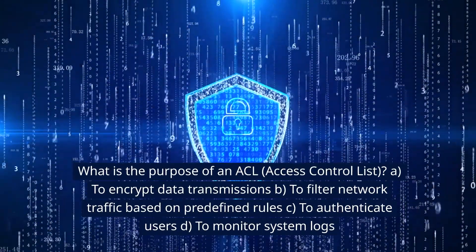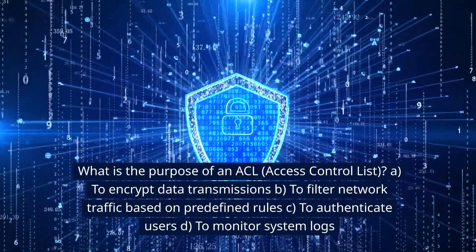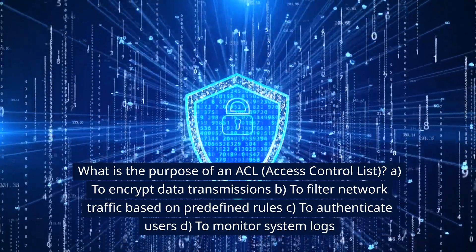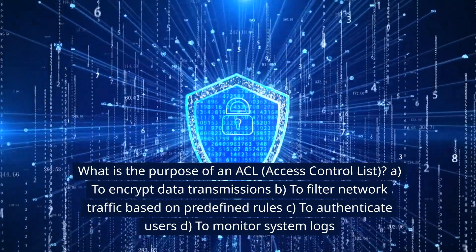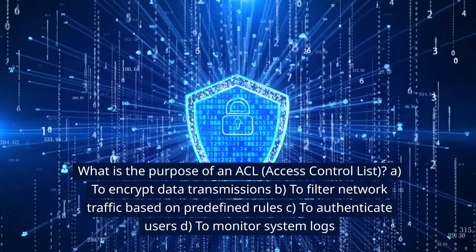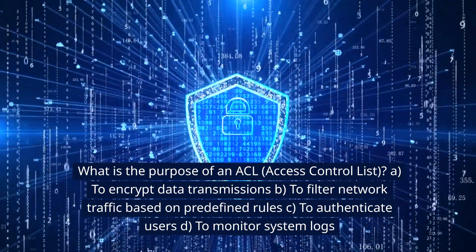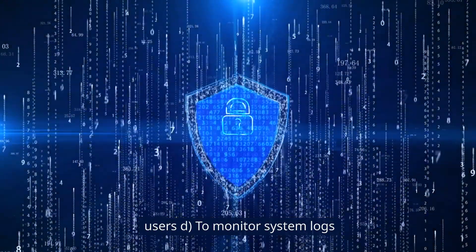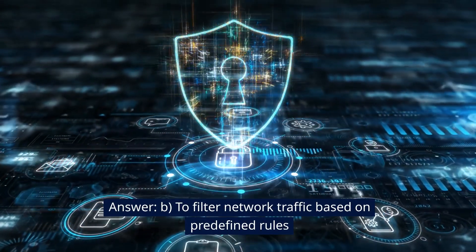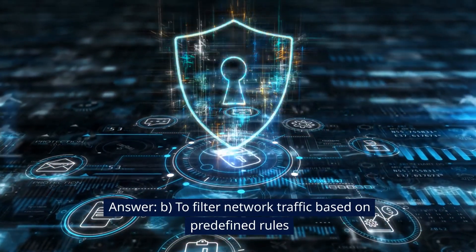What is the purpose of an ACL (Access Control List)? A. To encrypt data transmissions. B. To filter network traffic based on predefined rules. C. To authenticate users. D. To monitor system logs. Answer: B. To filter network traffic based on predefined rules.